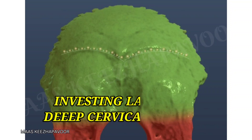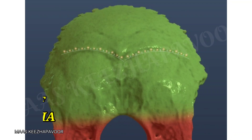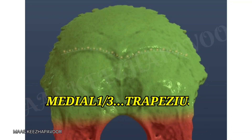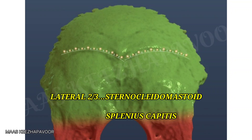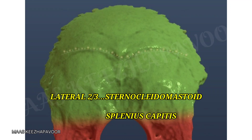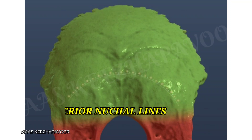The investing layer of deep cervical fascia is attached to the superior nuchal line. The medial one-third of this line gives origin to trapezius, and the lateral two-thirds receive insertion of sternocleidomastoid and splenius capitis. A pair of inferior nuchal lines extend from the middle of the external occipital crest.